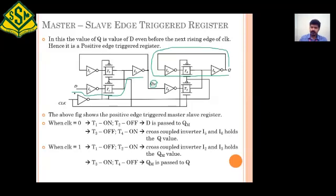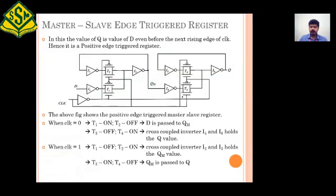So when clock is equal to zero, the master is in transparent mode — whatever is applied at D is transmitted to QM — while the slave is in hold mode, feeding back the output to itself. When clock is equal to one, T1 goes to off condition and T2 goes to on condition. In the slave, T3 goes to on condition and T4 goes to off condition. As T2 is on, whatever value is available at QM...